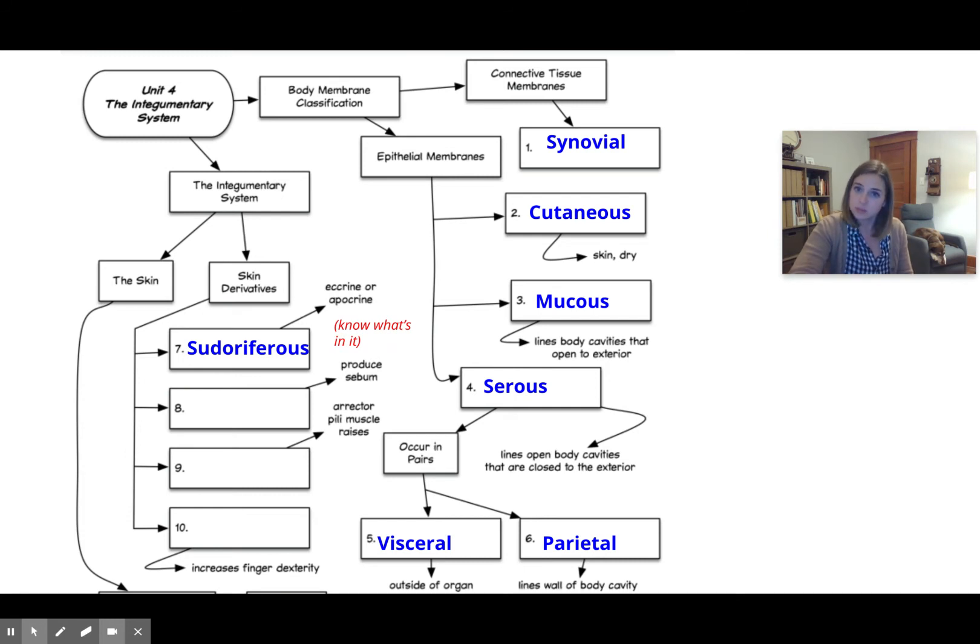That gland that produces sebum, which is oil, is called the sebaceous gland. And then the other skin derivative that you need to know for the test is what the erector pili muscle raises, meaning what's the thing that stands up when your erector pili muscle pulls on it? That's going to be your hair follicles. And then lastly, the thing on the ends of our fingers that increase our skin dexterity, meaning we can use it as a little tool to scratch things, to pick things up a little bit more easily - those are your nails.